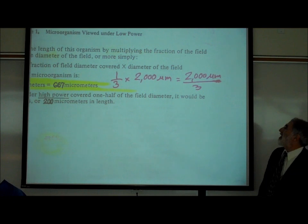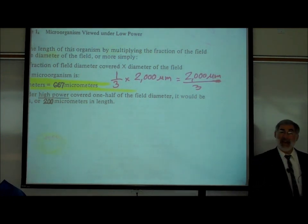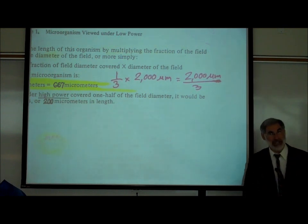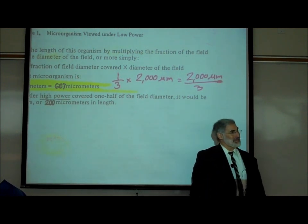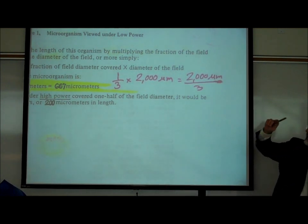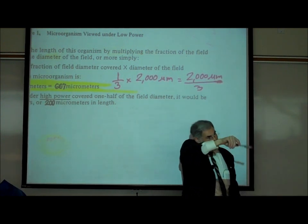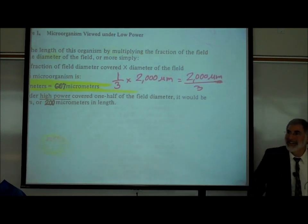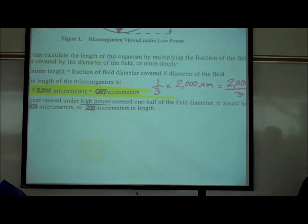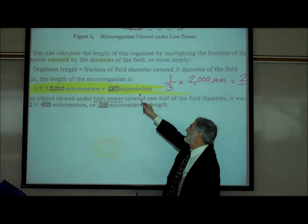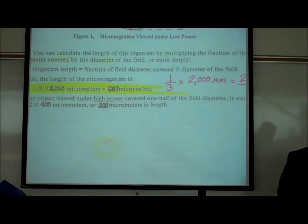If you divide 3 into 2,000 — and you can use a calculator — 3 goes into 20 six times, giving 18; 20 minus 18 is 2; bring down a 0; 3 goes into 20 again six times. You basically get 666.66 — it never comes out even. You can just say it's about 667 micrometers. We've now estimated the length of that organism.